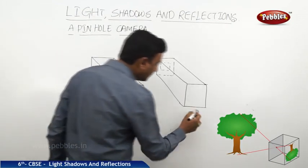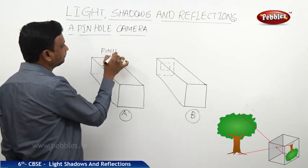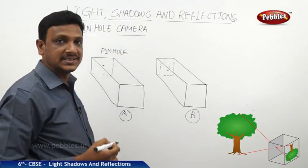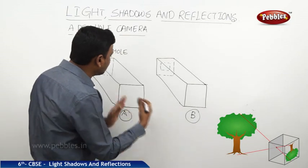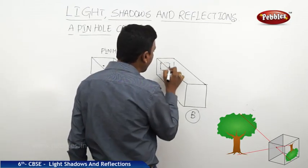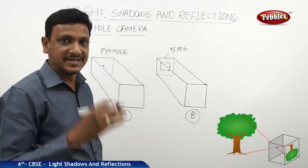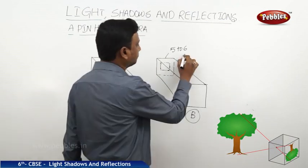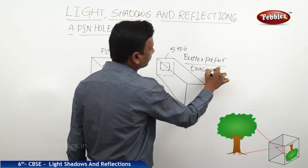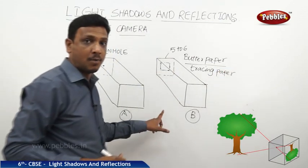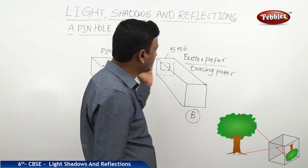This is the outer box, labeled A, and this is box B. For the outer box, at the back side, you make a hole — a pinhole. That is why you call this camera a pinhole camera. For the inner box, at the back side, you cut a square of 5 to 6 centimeters. After cutting the square, you paste one butter paper — also called tracing paper — over the square cut in the inner box. The outer box has the pinhole; the inner box has the cutting covered by tracing paper.